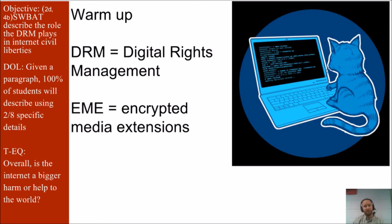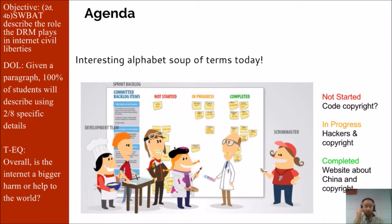DRM stands for Digital Rights Management, and EME stands for Encrypted Media Extensions. These two can be pretty confusing, and it's a pretty technical lesson seeing how we're talking about technical details of protecting copyright, but a really interesting one — interesting alphabet soup of terms today.